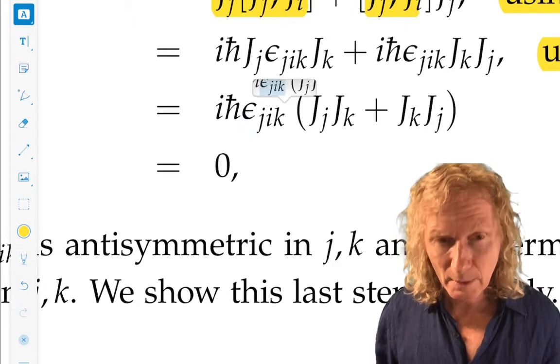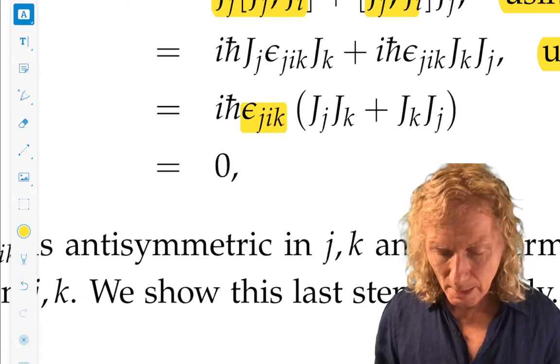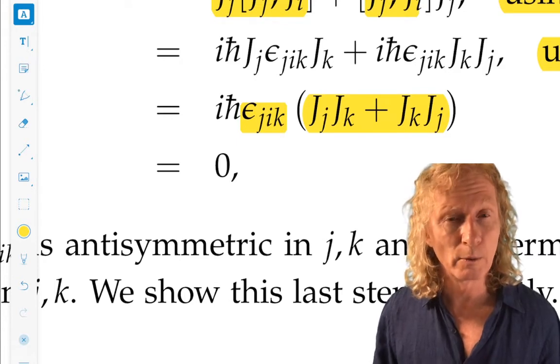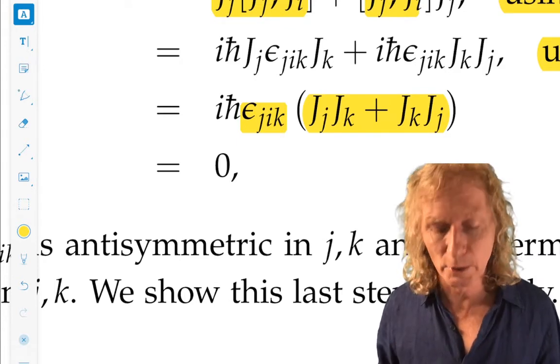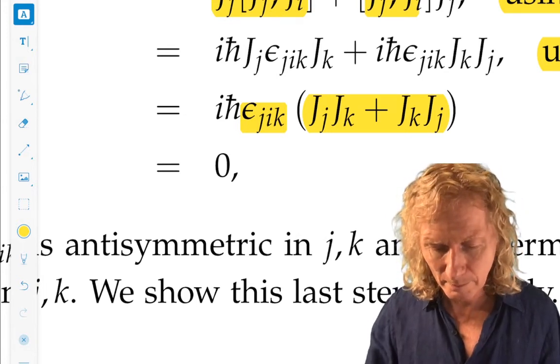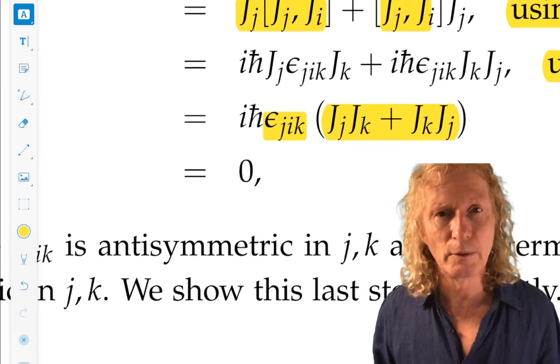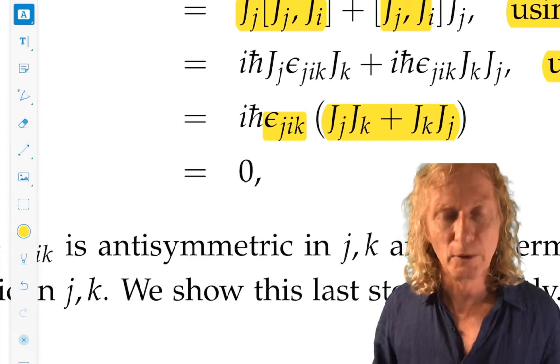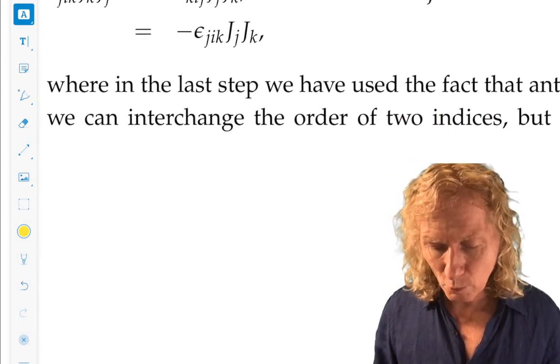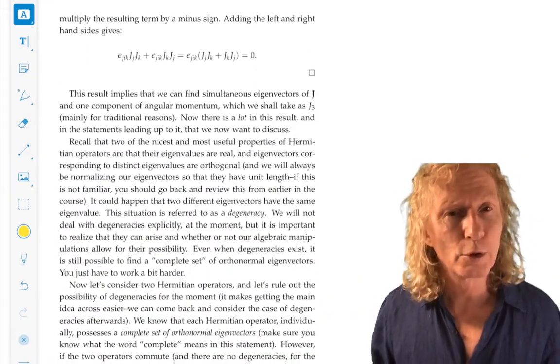The Levi-Civita symbol is anti-symmetric in J and K. And this quantity is symmetric in J and K. That is we can reverse J and K and nothing changes. But if we reverse J and K here, we change the sign. The only way we can have a product this way is if the entire term is zero.